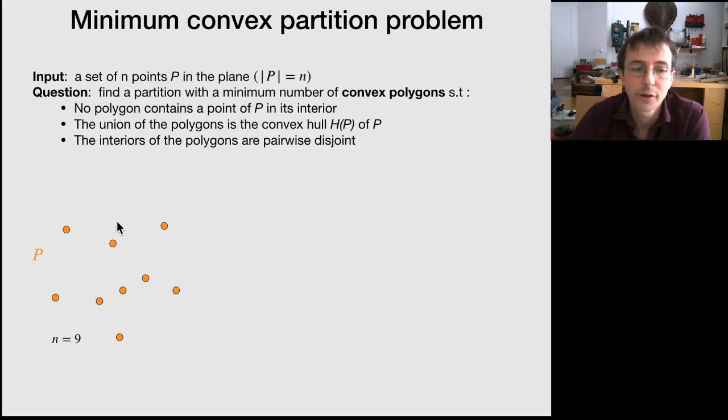And the question is to partition the convex hull of these points, which is denoted H(P) here. The question is to find a partition of the convex hull with minimum number of convex polygons.